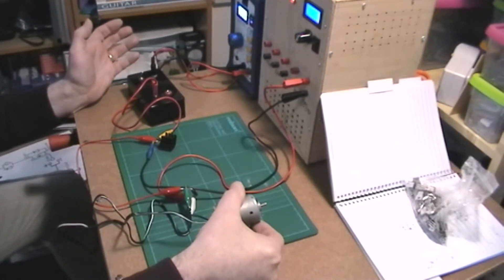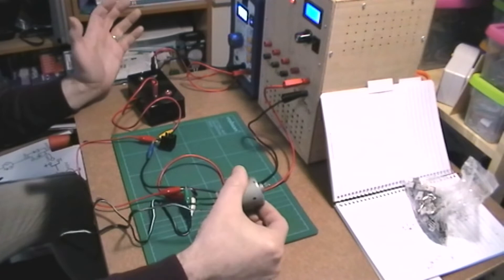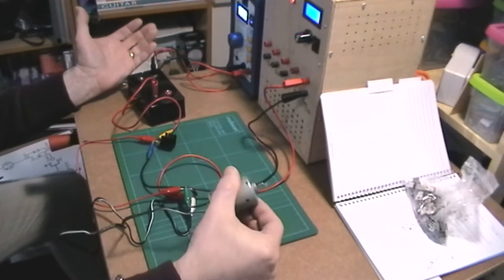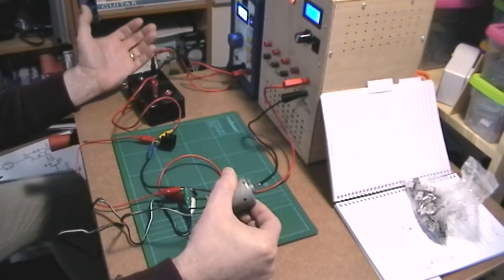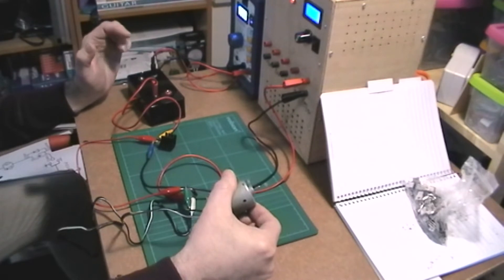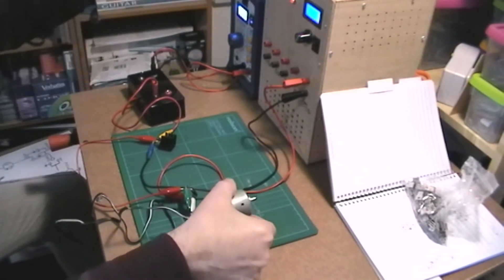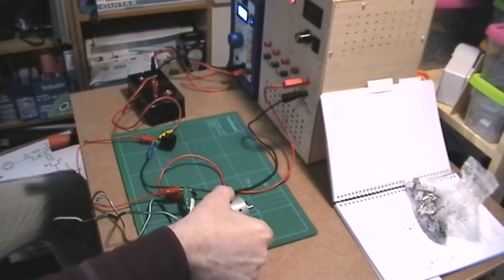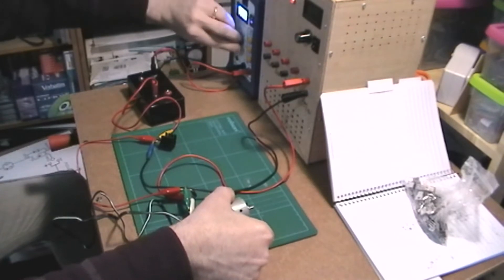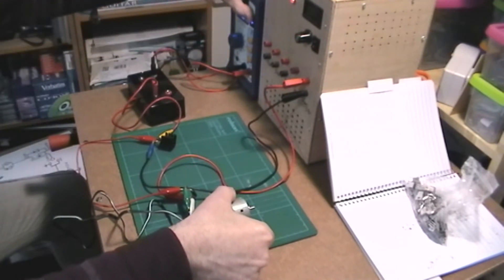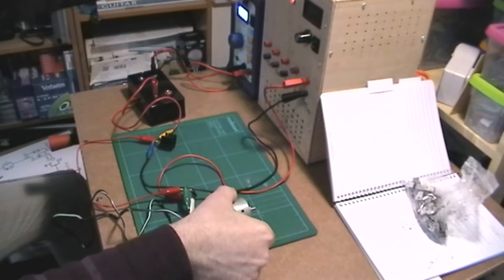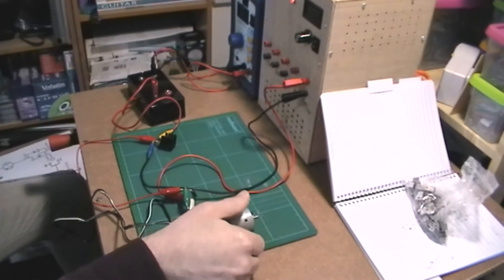Now I wonder what current this motor is drawing. As it's quite a decent size motor. Well, for electronics it is. So let's get an ammeter in there and find out. Turn off these power supplies.